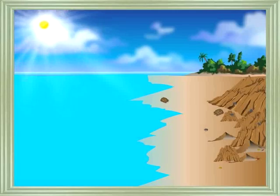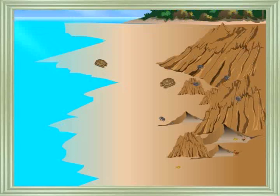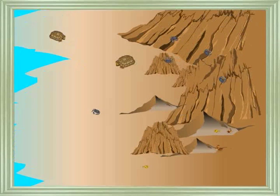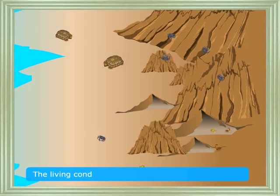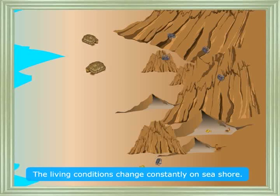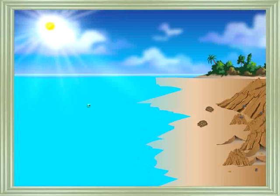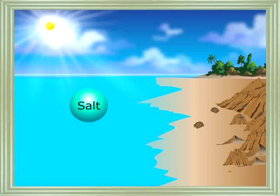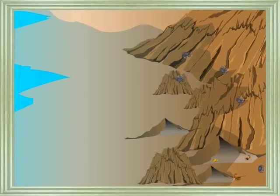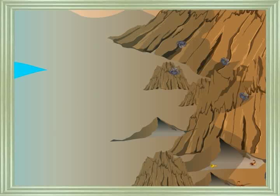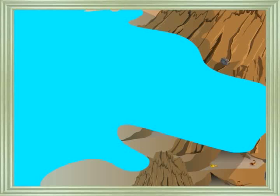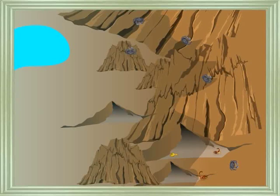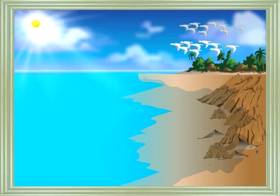Not only in the sea but also on the seashore there are organisms. The living conditions change constantly on the seashore. The temperature and salt content of water affect their survival. Some have developed organs to firmly attach to rocks to withstand the waves. Some live in crevices between rocks and some live in burrows. Many birds also form part of the shore ecosystem.